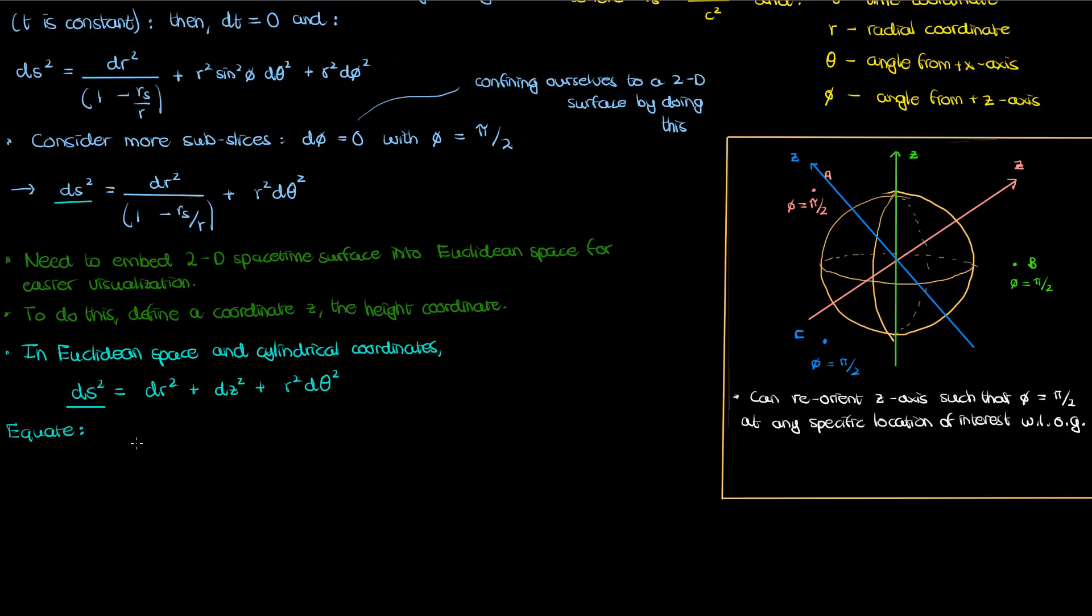The reason that I equate the two ds squared equations is that if I am to embed this 2D slice of Schwarzschild spacetime in three-dimensional Euclidean space, the distance or separation the ds squared between any two points on the two-dimensional slice, the first ds squared equation, must equal the distance between those same points when I draw them in a three-dimensional Euclidean space on the embedding diagram surface. And when I equate the right-hand sides of these line elements this is the equation I'll end up with.